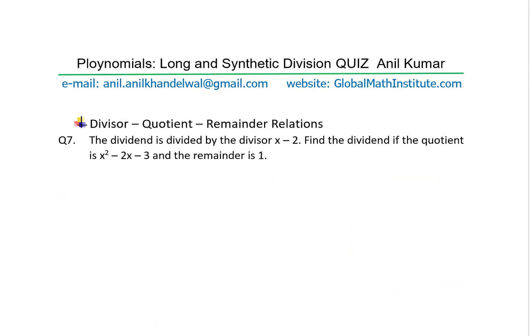Question number 7: the dividend is divided by the divisor x minus 2. Find the dividend if the quotient is x squared minus 2x minus 3 and the remainder is 1.